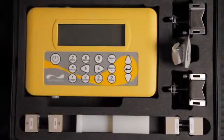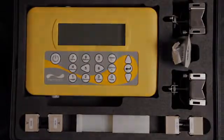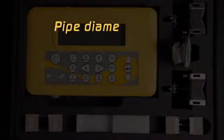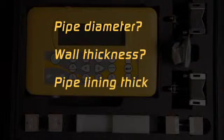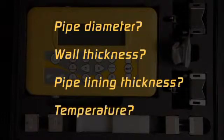First steps begin with how to program the flow meter. When programming the unit you need to know the pipe outside diameter, the wall thickness, the pipe lining thickness if required, and the temperature of the application.